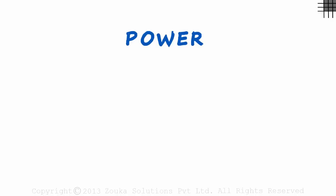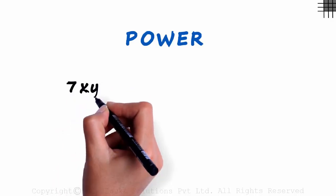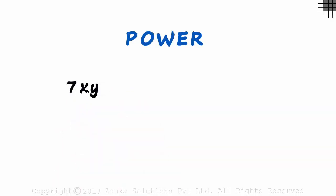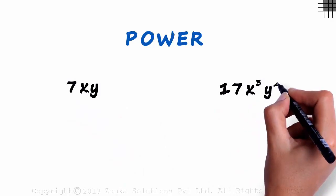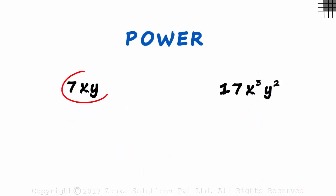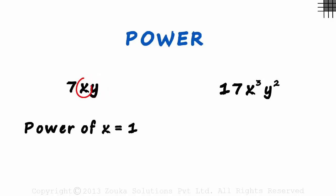Before we see the types of terms, we need to understand the concept of the power of variables. Let's consider two different terms. The first term is 7xy and the second one is 17x cubed y squared. Observe the first term — it has two variables, x and y. The power of x is 1 and the power of y is also 1.